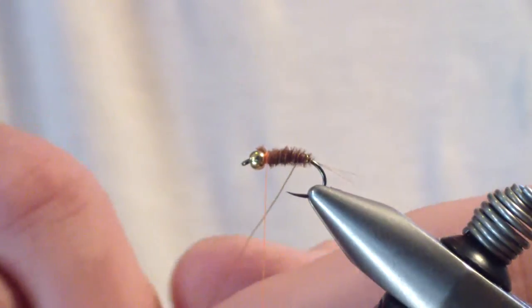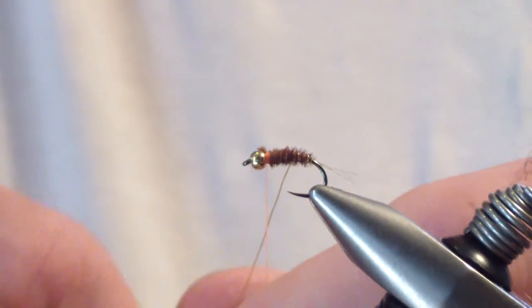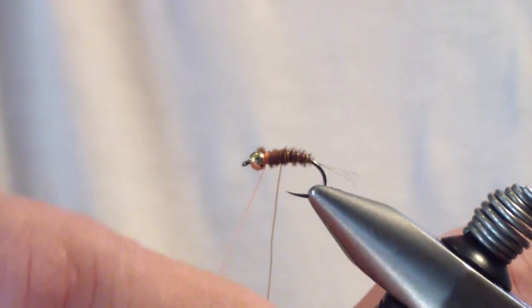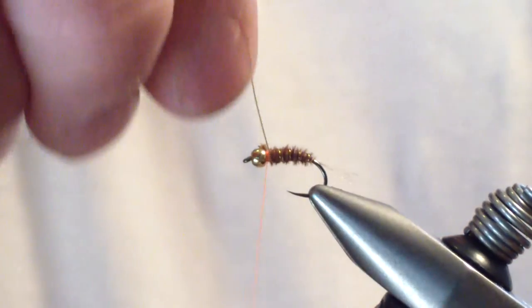And you're going to take your wire and wrap forward. I counter wrap in the opposite direction. Reinforce that pheasant tail which can be a little fragile.